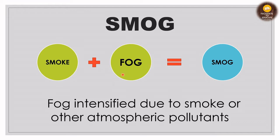The combination of smoke and fog forms smog. The name itself is a combination of 'smoke' and 'fog', and the smog that is formed is also a combination of smoke and fog. The definition says: fog intensified due to smoke or other atmospheric pollutants. We see fog basically in winters, and when that fog is intensified due to atmospheric pollutants and smoke coming out of chimneys or other places, it forms smog.